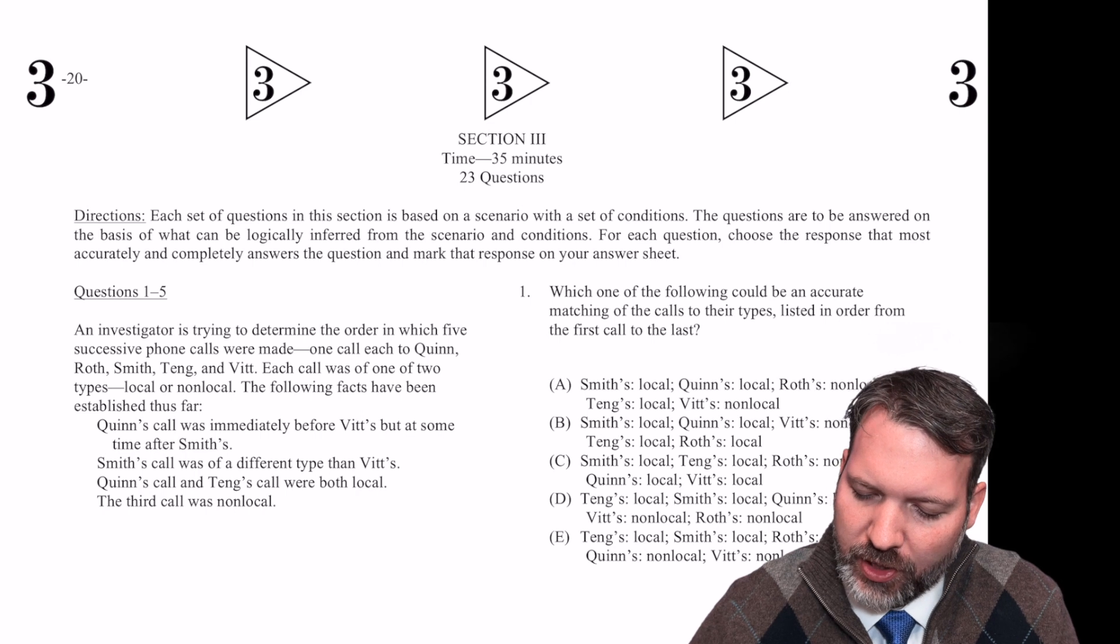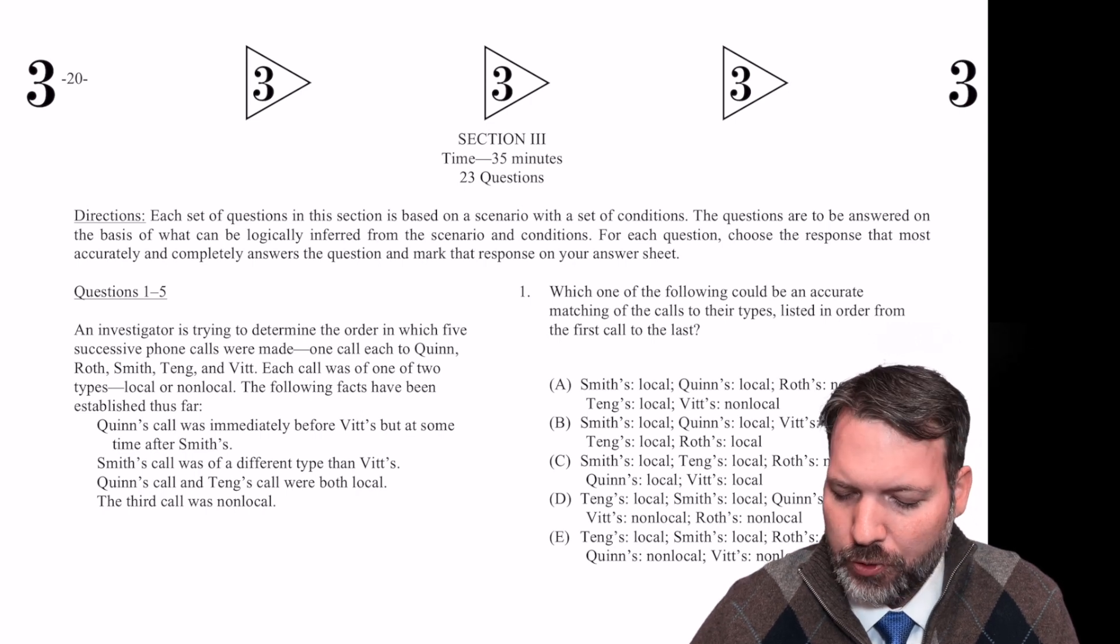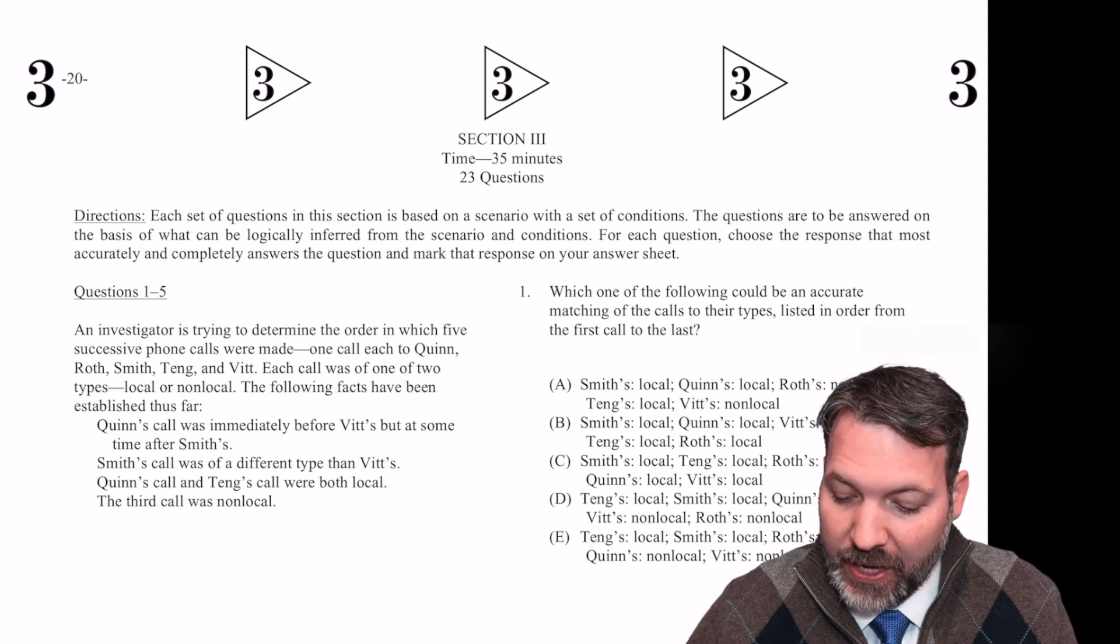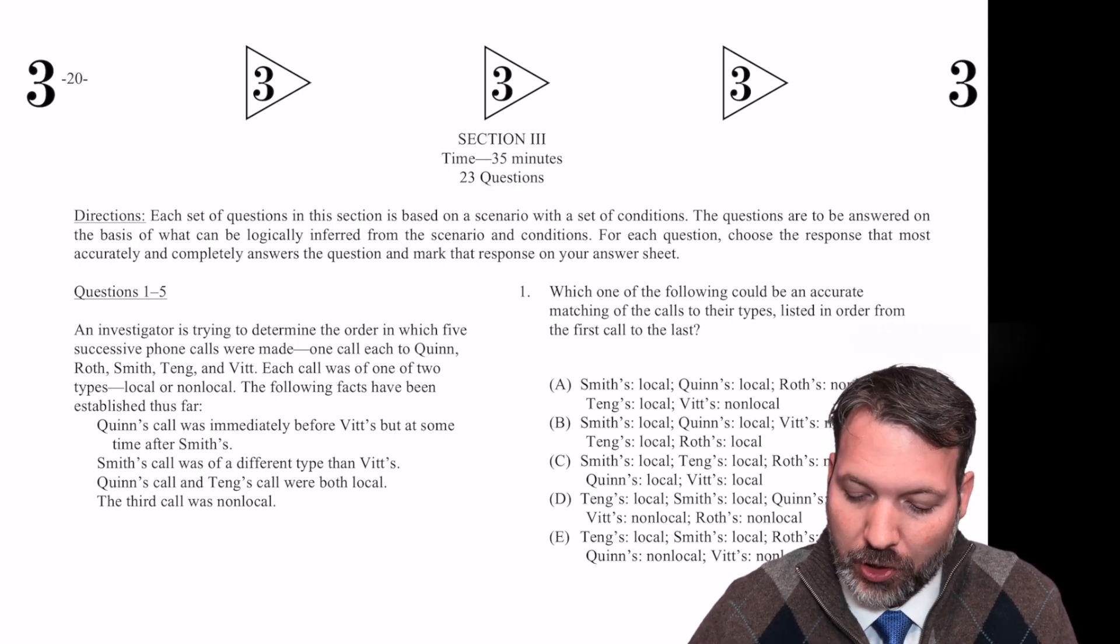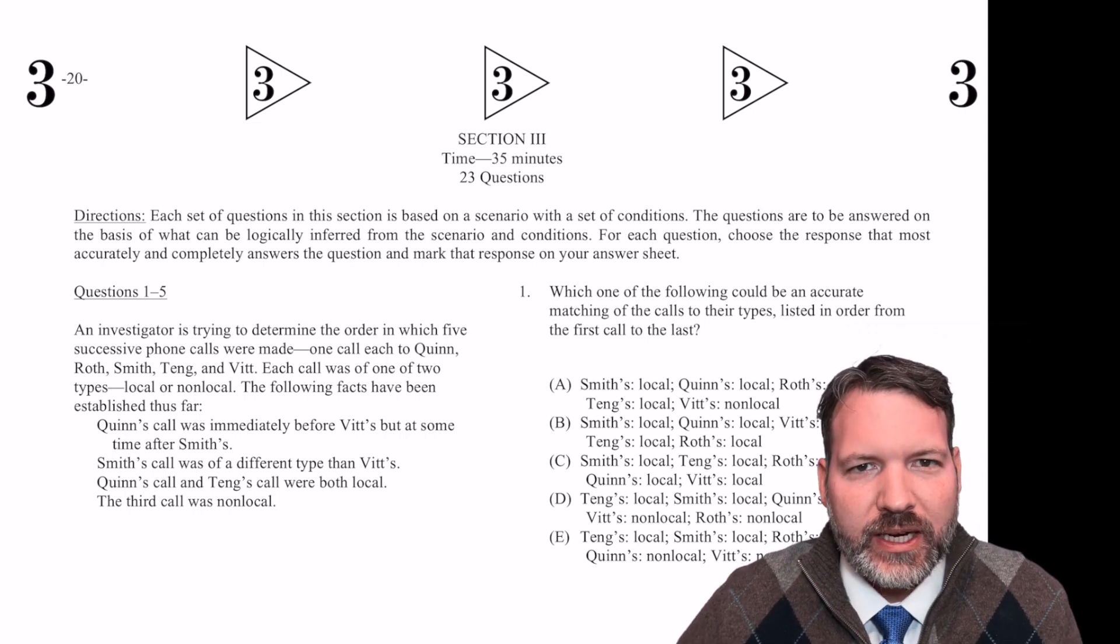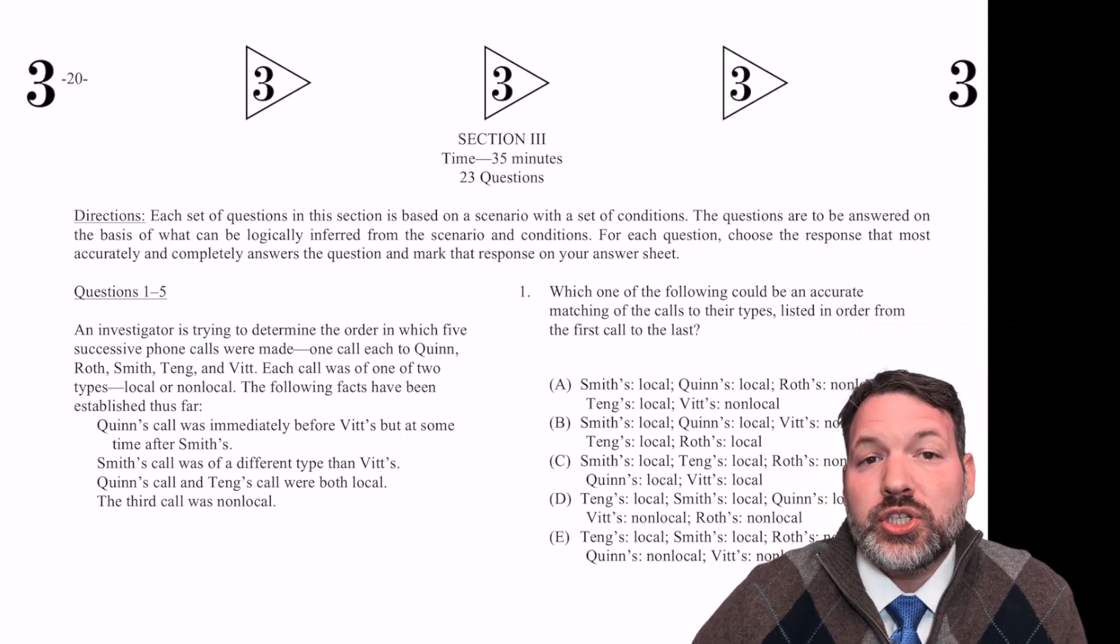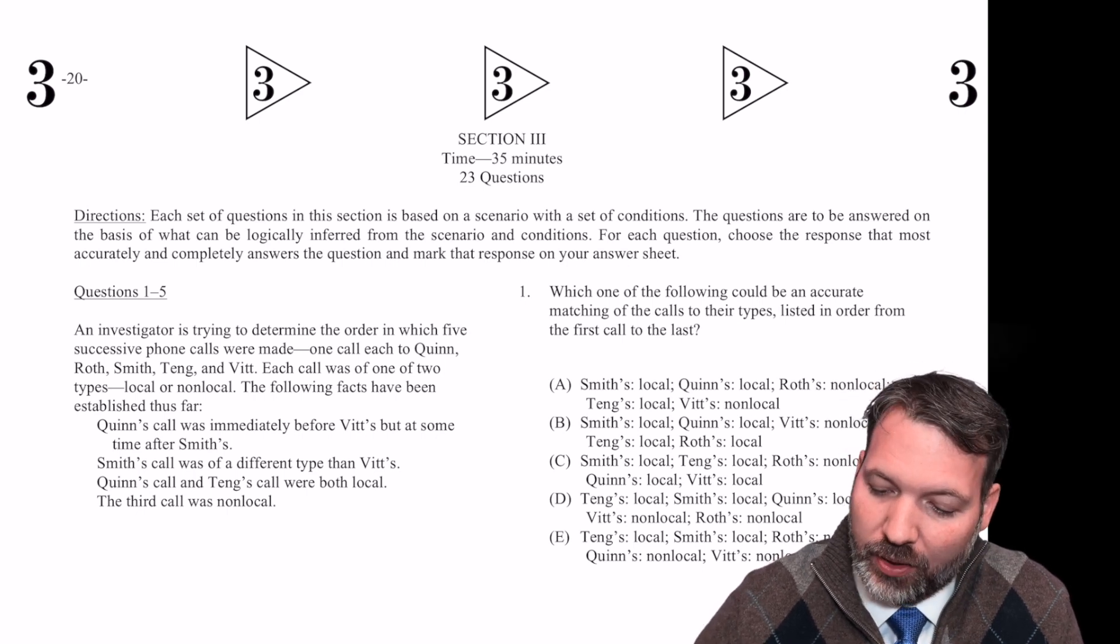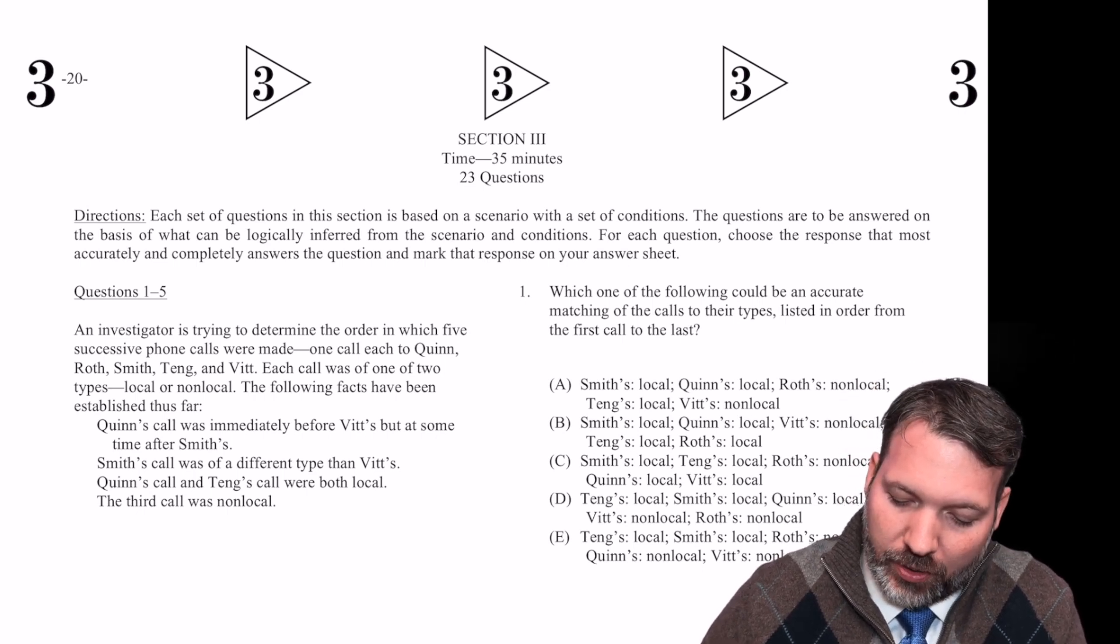An investigator is trying to determine the order in which five successive phone calls were made, one call each to Quinn, Roth, Smith, Tang, and Vitt. Each call was of one of two types, local or non-local. Following facts have been established thus far. Ooh, like a detective story. So this is pretty clearly a two-dimensional order game. Our main objective here is to place these elements in order. Let's go ahead and jot down our elements.